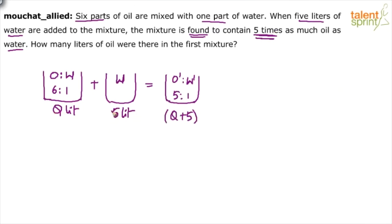Initial quantity Q liters, then we added five liters, so final quantity will become Q plus 5 liters. So initial ratio was 6 is to 1. You have added pure water, 100% water, zero oil, only water. The new ratio becomes 5 to 1. Now either go for allegation rule or simply balance the quantity of oil. Remember,